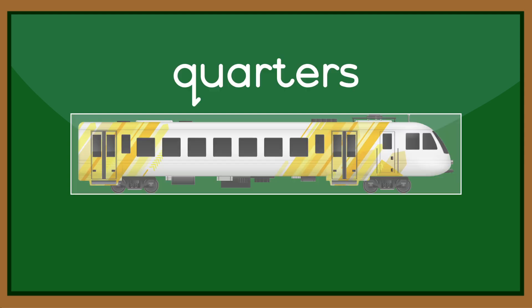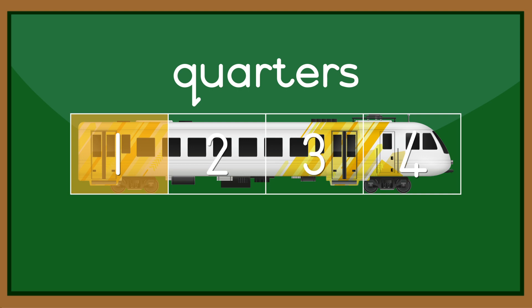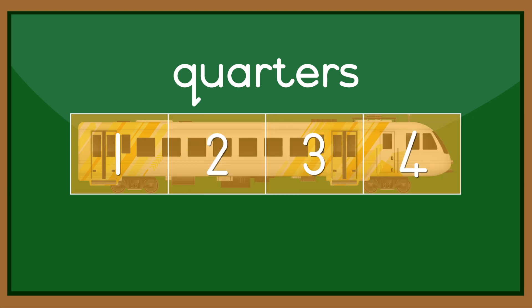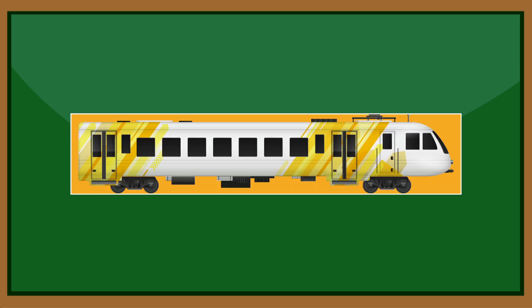In this example, the whole is divided into four parts. Those parts are called quarters. One quarter, two quarters, three quarters, four quarters, which equal a whole.